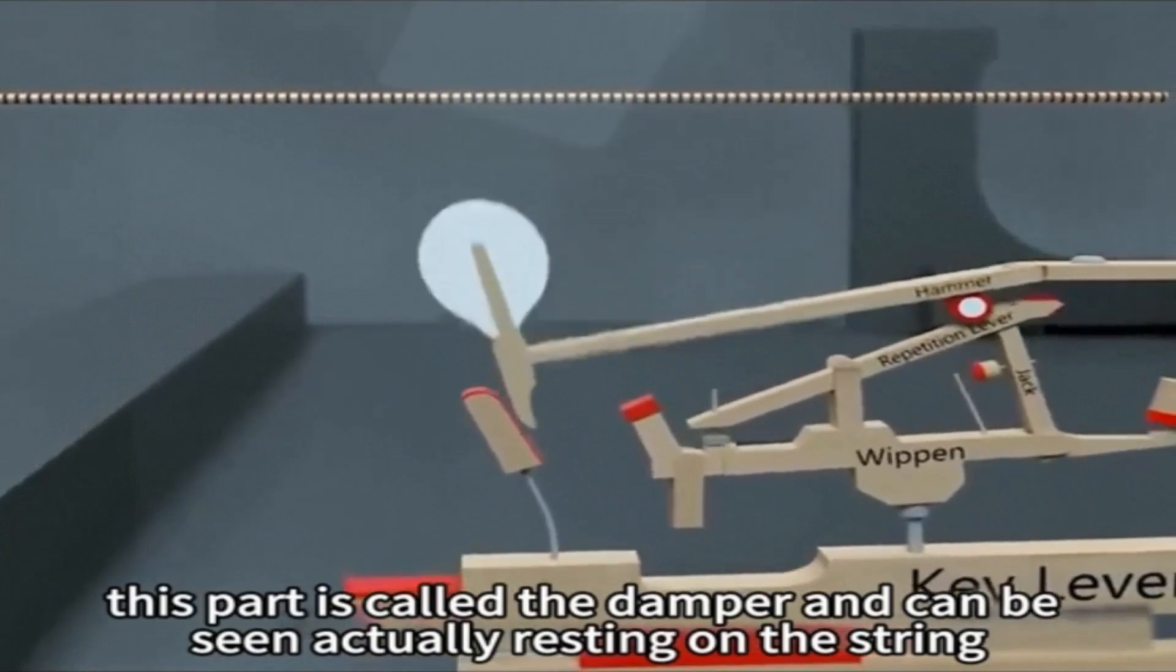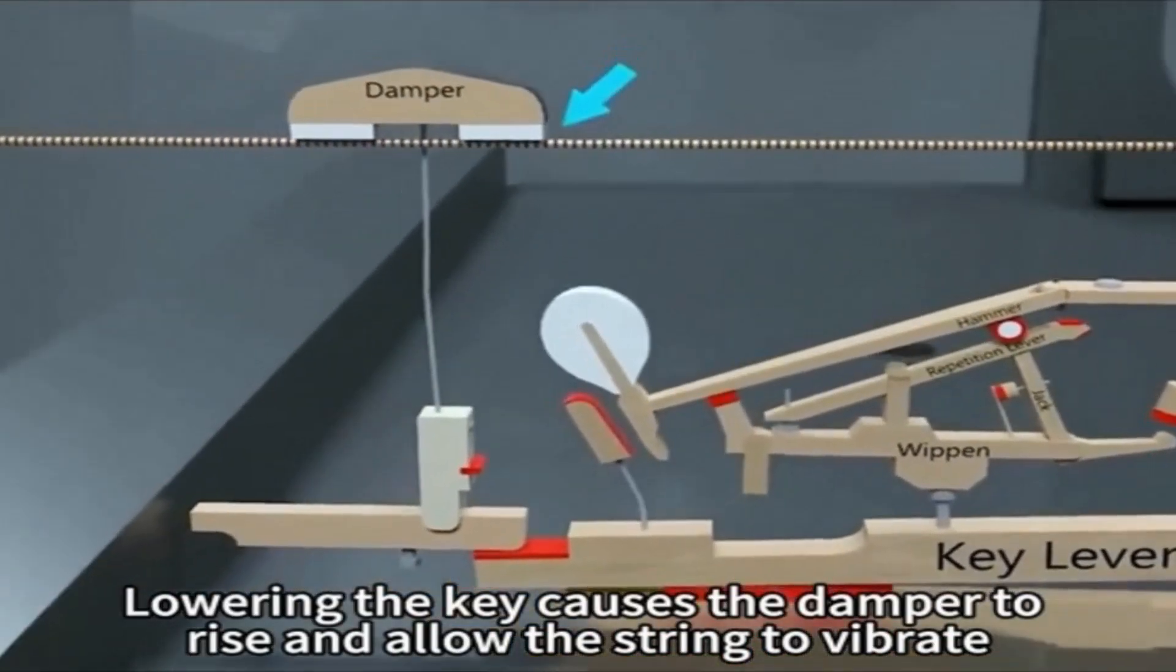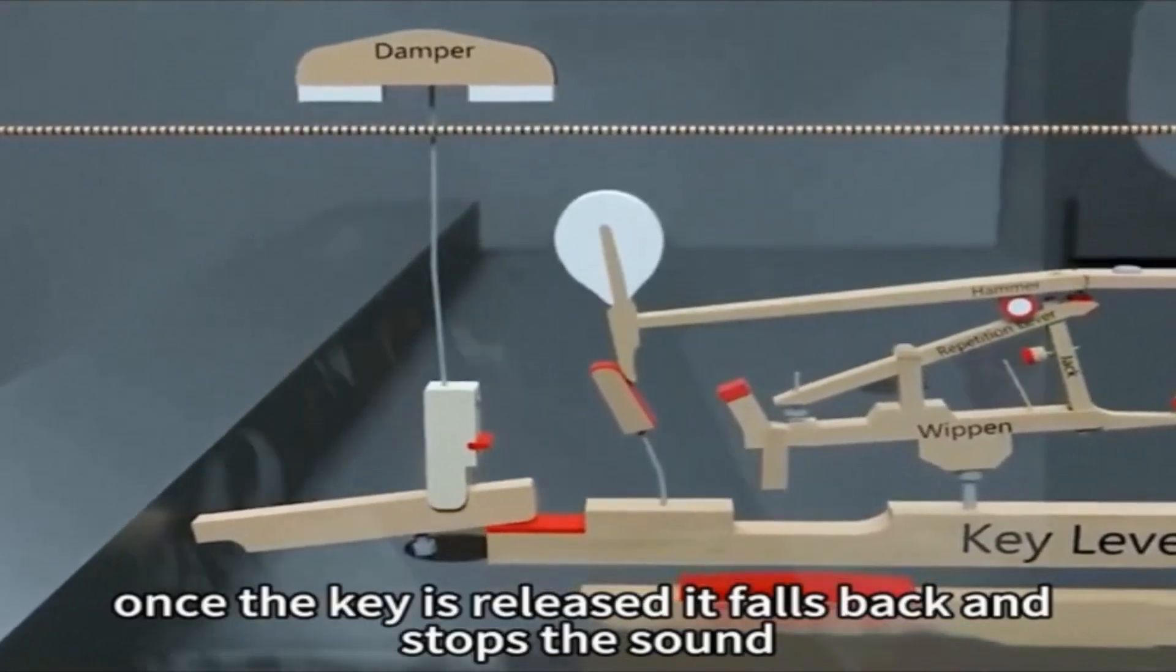This part is called the damper, and can be seen actually resting on the string. Lowering the key causes the damper to rise and allow the string to vibrate. Once the key is released it falls back and stops the sound.